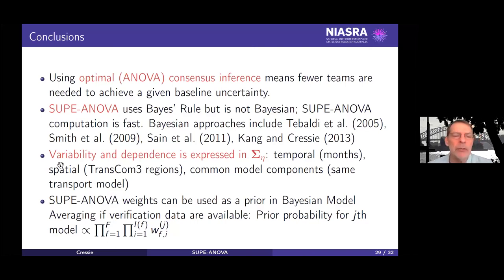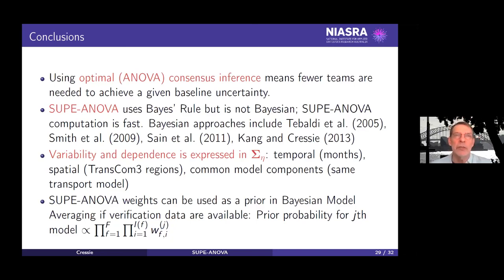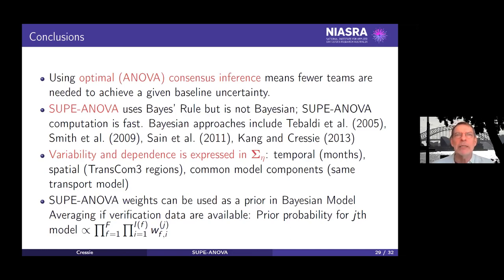The third bullet: some of you may have noticed there really wasn't much dependence in this model — no time series dependence and no spatial dependence between the transcom regions, which are at a very coarse level. Later MIPs are at much finer resolution, and the spatial dependence is needed. The place to put it is in sigma-gamma or sigma-eta. Probably more importantly, some of these MIPs actually share components — they share transport models, for example — so one could put a random effect capturing the fact that two teams use the same transport model, which would lead to dependence.